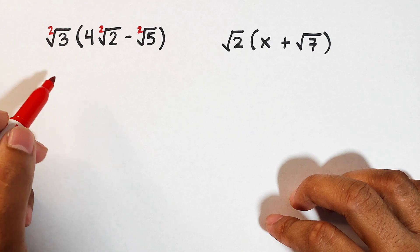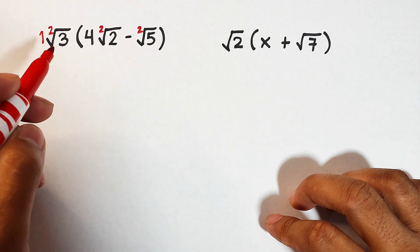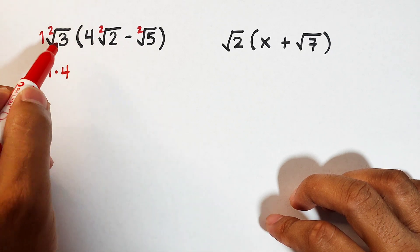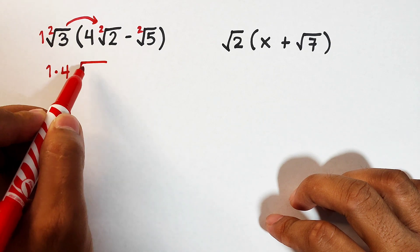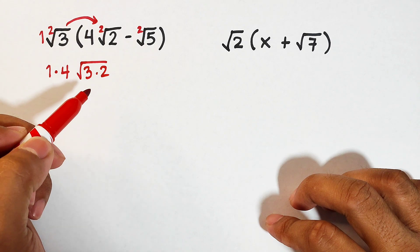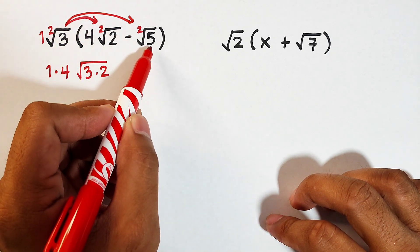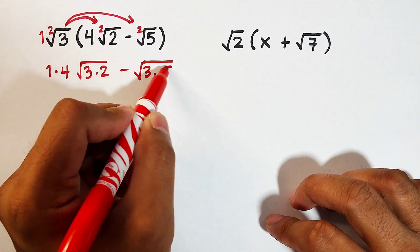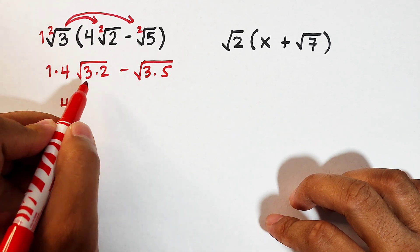For the square root of three, we have a coefficient of one. We can multiply one and four — that would be one times four. As for the radicals, we multiply the square root of three times two. Next, square root of three times square root of five gives us minus square root of three times five. We can simplify: the coefficient is four.